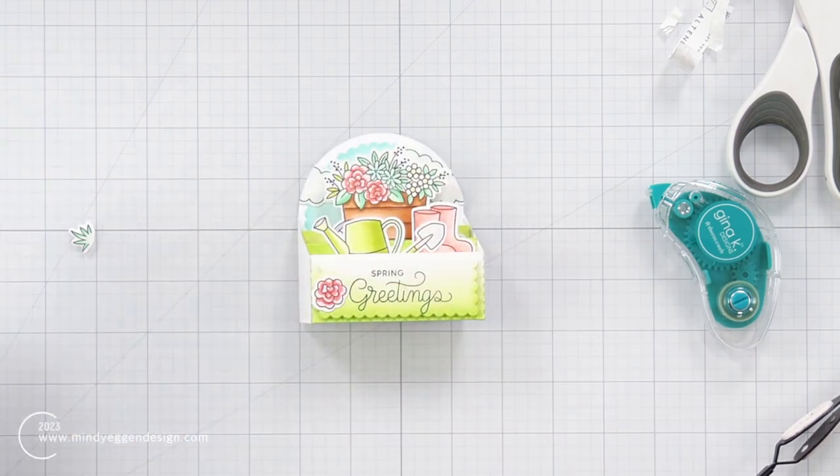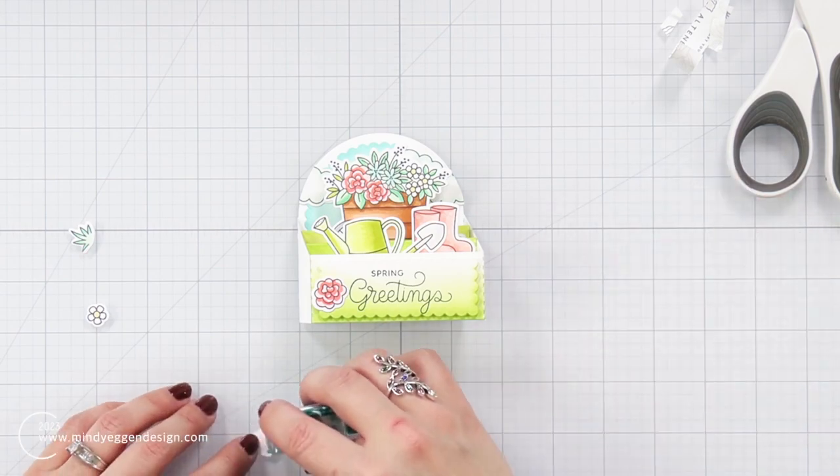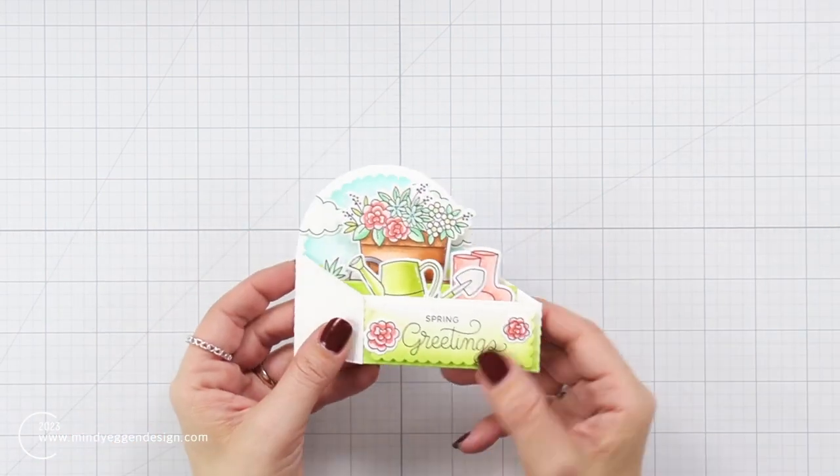Now, here I have some of those flowers that I'm going to add to the front of the box. And then my grass tufts, I'm going to just kind of fill in some of the areas by my watering can and over by my wheelbarrow.